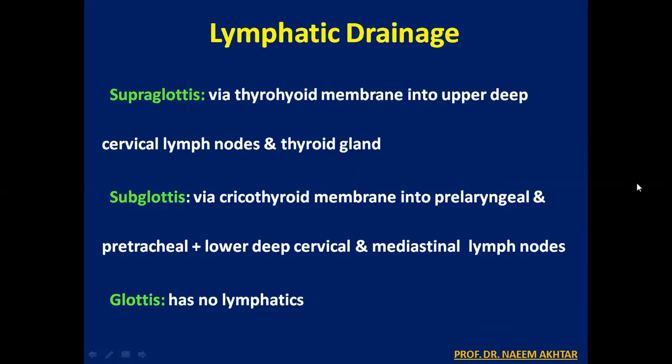Regarding lymphatic drainage, the supraglottis drains via the thyrohyoid membrane into the upper deep cervical lymph nodes and thyroid gland, whereas the subglottis drains via the cricothyroid membrane into the pre-laryngeal, pre-tracheal, lower deep cervical, and mediastinal lymph nodes. The glottis has virtually no lymphatics at all.